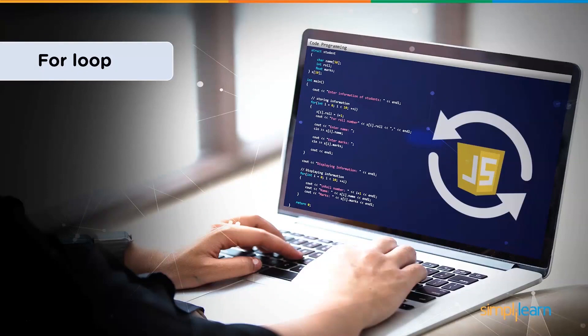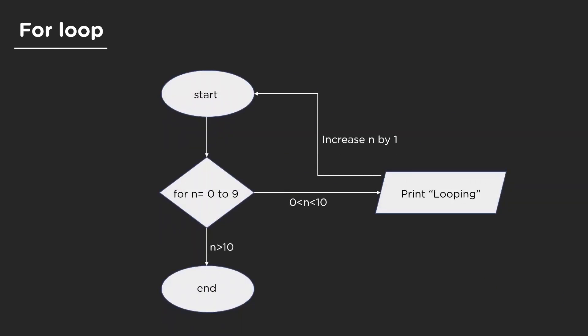The first loop is the for loop. So what exactly happens is that say, for example, you want to print the word 'looping' say 10 times. You can start and have a for loop which goes from 0 to 9, and then increase the number by 1 every time. Once it's equal to 10 or greater than 10, it ends the loop. Let me help you understand this better with an example in our editor, VS Code.